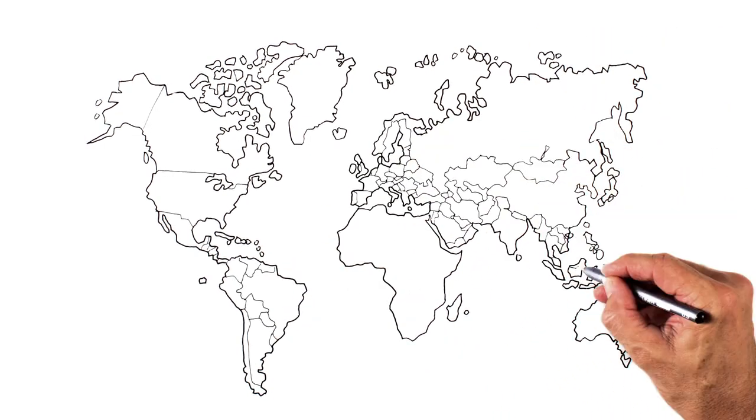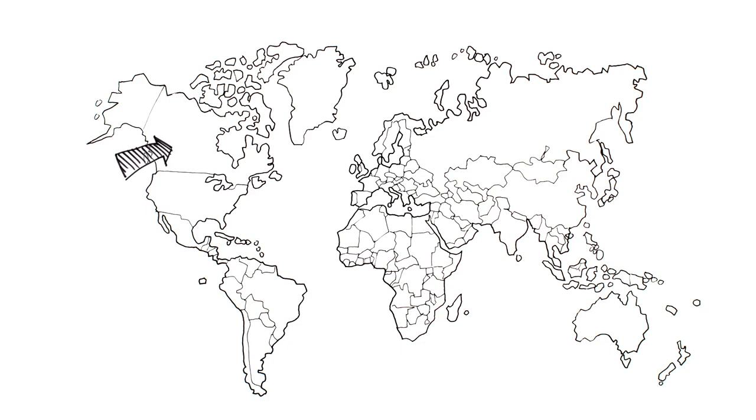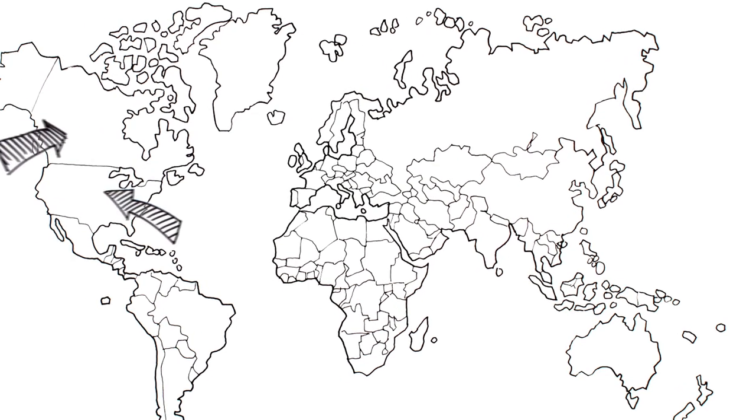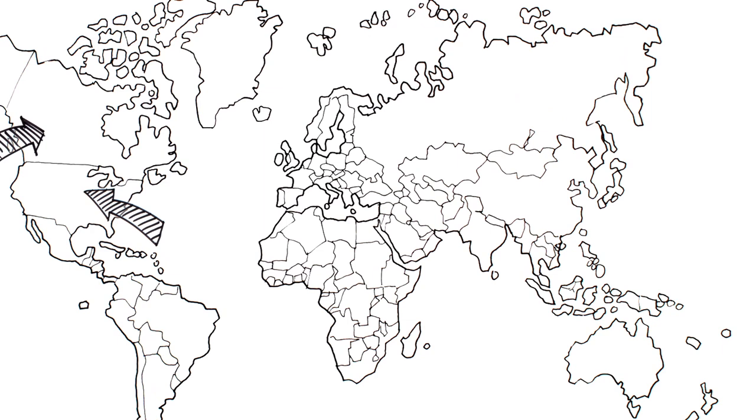Federalism is often chosen by large countries, like Canada or the United States. Or countries with diverse communities concentrated in different parts of that country, like Switzerland or Nepal.